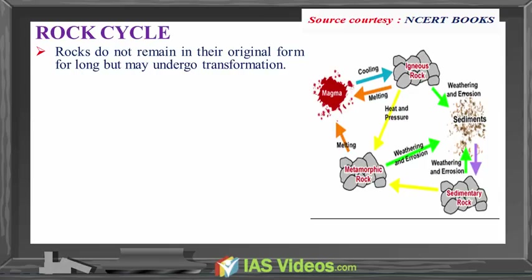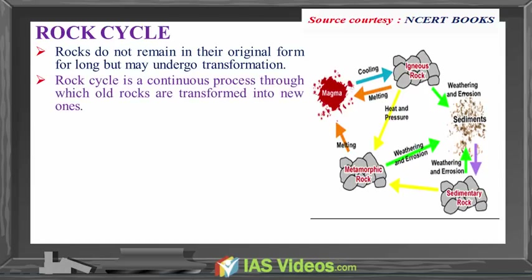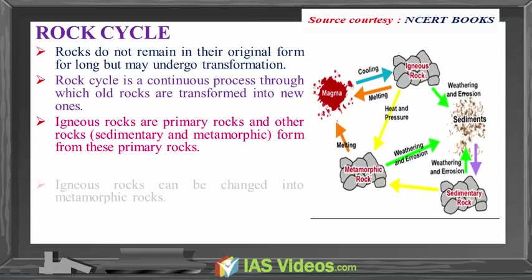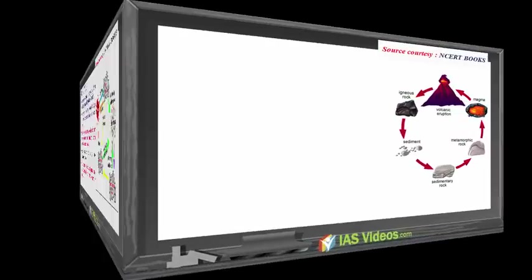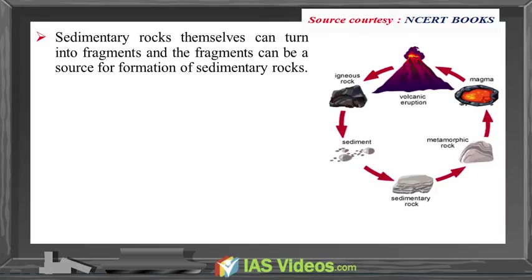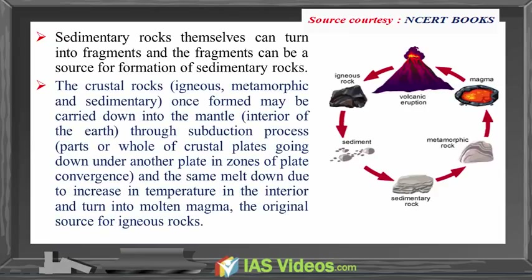Rock cycle: rocks do not remain in their original form for long but may undergo transformation. Rock cycle is a continuous process through which old rocks are transformed into new ones. Igneous rocks are primary rocks and other rocks like sedimentary and metamorphic form from these primary rocks. Igneous rocks can be changed into metamorphic rocks. The fragments derived out of igneous and metamorphic rocks form into sedimentary rocks. Sedimentary rocks themselves can turn into fragments and be a source for formation of new sedimentary rocks. The crustal rocks — igneous, metamorphic and sedimentary — once formed may be carried down into the mantle through the subduction process, parts of crustal plates going down under another plate in zones of plate convergence, and the same melt down due to increase in temperature in the interior and turn into molten magma, the original source for igneous rocks.